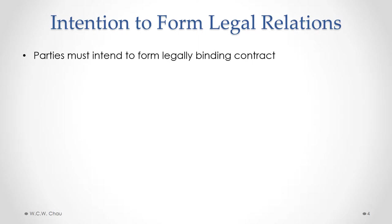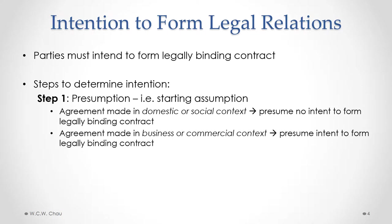To determine intention there are two steps in the analysis. The first step is determining the presumption — what's our starting assumption. That presumption depends upon the context in which the agreement was made. If the agreement was made in a domestic or social context, the presumption is that there was no intent to form a legally binding contract. If the context was a business or commercial context, the presumption is that there is an intent to form a legally binding contract.